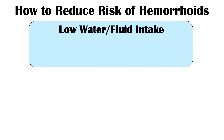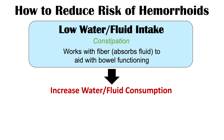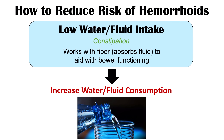Along with low fiber intake, low water or fluid intake is also a risk factor for hemorrhoids. This is again related to constipation — fluid works together with fiber, as fiber absorbs fluid and aids bowel functioning, reducing the risk of constipation. This reduces intra-abdominal pressure, so it's important to increase your water and fluid consumption alongside increasing fiber intake.